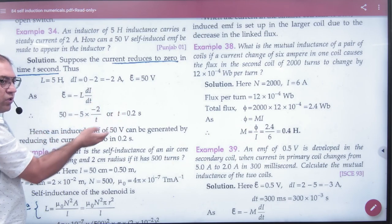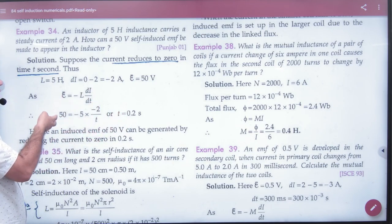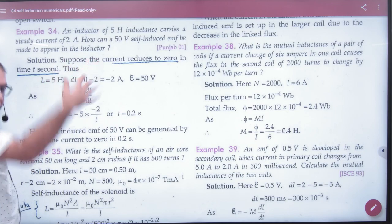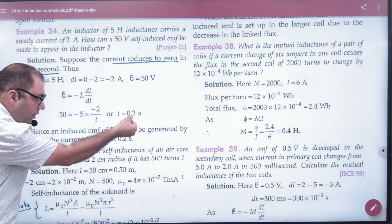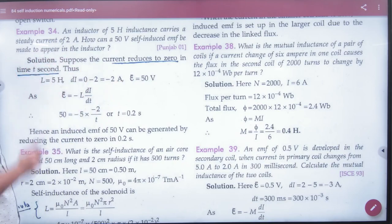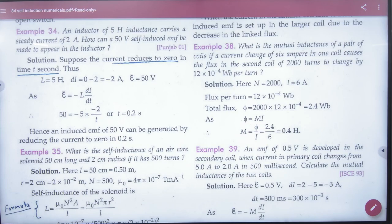Time is 0.2 second. So you will write at the end that if you make the current go from 2 to zero ampere in this much time, then 50 volt EMF will develop. Find the time in this - the missing value you will find.